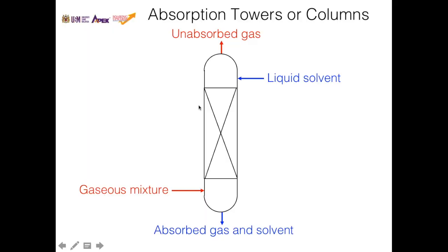This is a schematic of an absorption tower or column. Liquid solvent flows down from the top of the tower while the gaseous mixture flows up from the bottom. As the liquid solvent and gaseous mixture come into contact within the column, some of the gas gets absorbed into the liquid solvent, while unabsorbed gas exits at the top. The solvent laden with the absorbed gas collects at the bottom of the column.